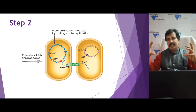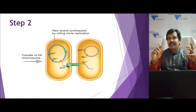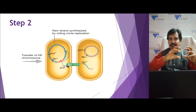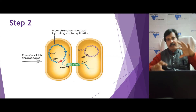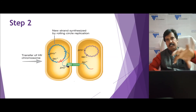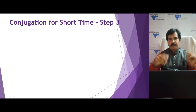In step 2, the type 4 secretory system favors the production of the relaxosome. The relaxosome enzyme finds the origin of transfer, nicks it, and gets associated with it. Then one strand moves towards the pili and gets transferred into the F minus cell, while the complementary strand is synthesized by a rolling circular mechanism. In step 3, two possibilities can occur: contact for a short duration or contact for a long duration.